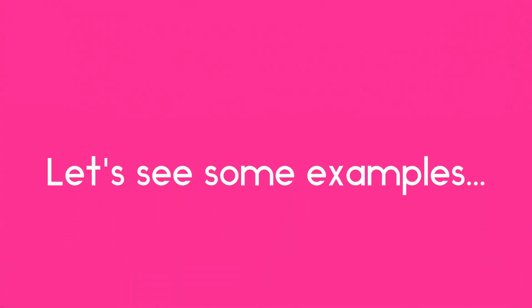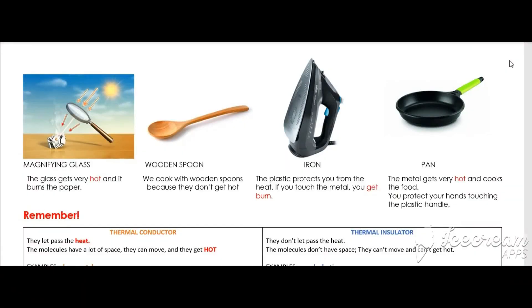Let's see some examples of thermal conductors and thermal insulators. We have here a magnifying glass. The glass gets very hot and it burns the paper, so the molecules of the glass can get very hot. So, it's a thermal conductor — the glass.